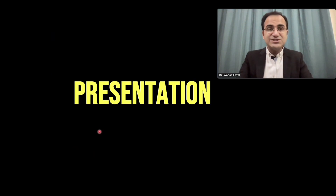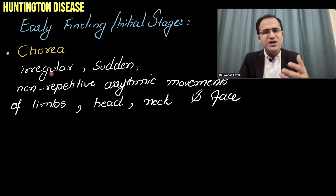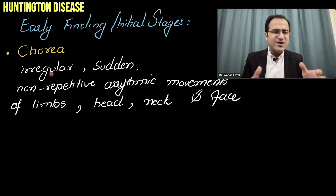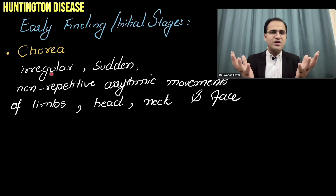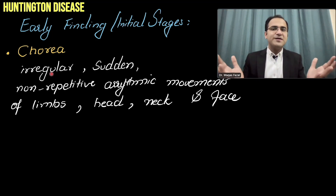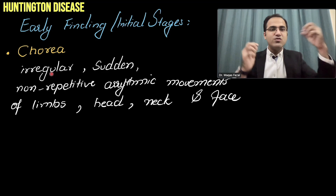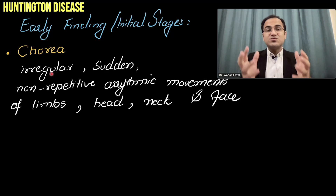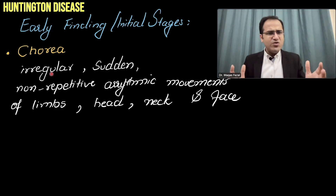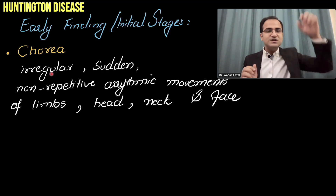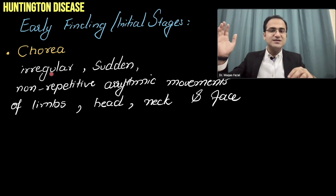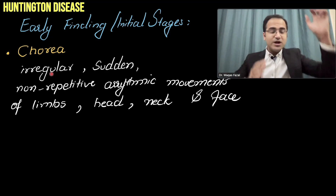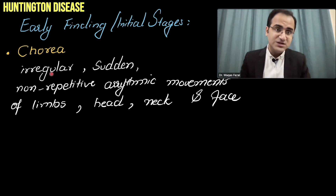The initial presentation is chorea. Patients report dropping things they did not intend to drop, with uncontrolled hand movements. Chorea is irregular, sudden, non-repetitive, arrhythmic movement — that is why it is called dance-like movement. It is uncontrolled; the patient cannot stop it. Sudden movements of the hands, head, neck, and body all occur.